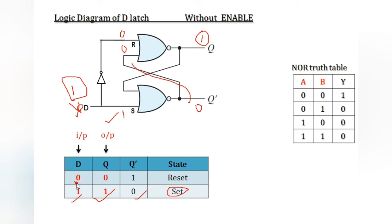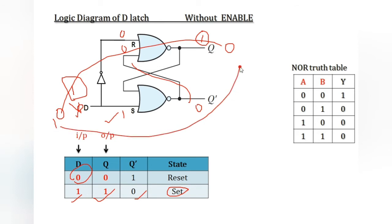When D is 0, the same input 0 goes to the output. When D is 1, again 1 goes to the output. This latch is called transparent because whatever input we give goes to the output — same input, same output. This is why it is called a transparent latch.